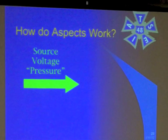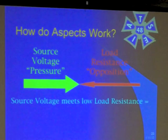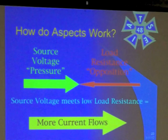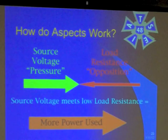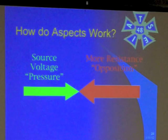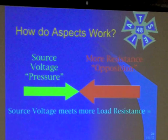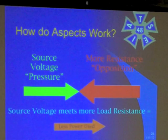So how do these aspects work together? Voltage and pressure push out from where you're sourcing it, and resistance is the opposition pushing back. Where you have a source voltage and it meets a low load resistance, you get more current flowing because there's less resistance — more current flows, and consequently you're using more power. Where it encounters higher resistance, less current flows, and consequently less power is used.